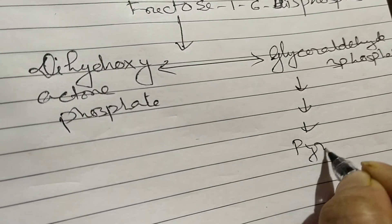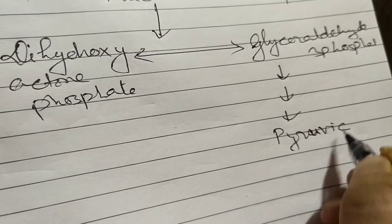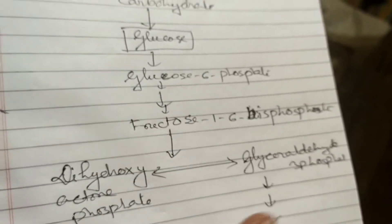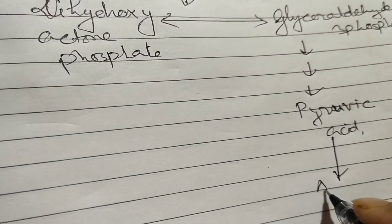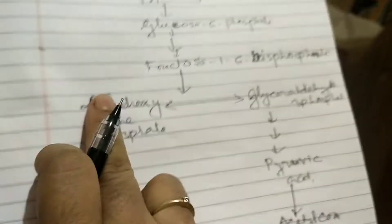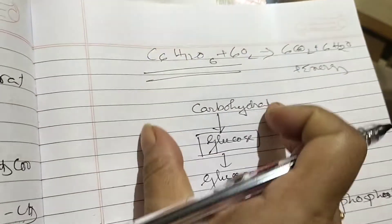Glyceraldehyde-3-phosphate is then converted through several steps into pyruvic acid, which is then converted into acetyl-CoA. Acetyl-CoA then enters the Krebs cycle, also known as the TCA cycle or citric acid cycle. CO2 is released and water is also released. So this entire process for carbohydrates is our catabolic process — breakdown is occurring.